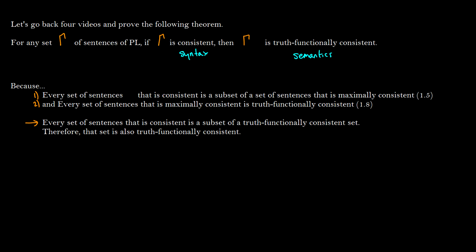Okay so every set of sentences gamma that is consistent is a subset of sentences that are maximally consistent. This was theorem 1.5 I think in video two or three. And we know that every set of sentences that is maximally consistent is truth functionally consistent. So this is the syntax to entailment relationship.